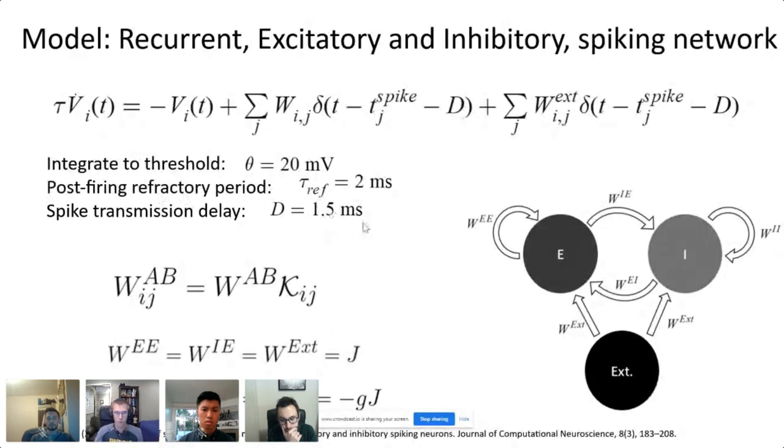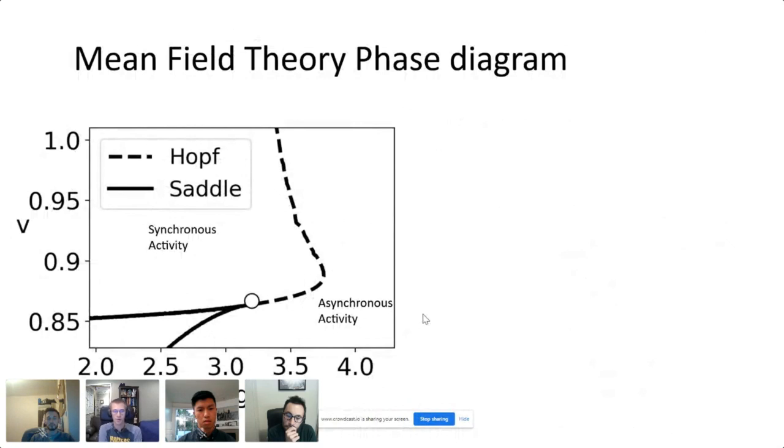When the membrane voltage reaches a threshold of theta then it fires, it resets to zero, and it stays there for a refractory period of two milliseconds before continuing to integrate. The spike transmission delay is 1.5 milliseconds. For the connectivity matrix we can decompose the recurrent activity into a two by two matrix for the excitatory and inhibitory populations and then a random matrix of zeros and ones that's sparse. The excitatory connections will have a post synaptic potential of j and inhibitory will have minus g times j.